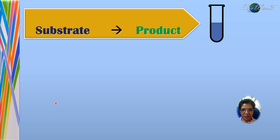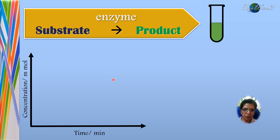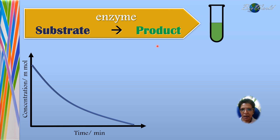In an enzymatic reaction, we have a substrate that will be converted by the enzyme into a product. To monitor the reaction, we can either measure the decrease in substrate or monitor the increase in product. Based on that data, we can plot a graph where the y-axis is concentration against the x-axis, which is time. If we monitor the decrease in substrate, we get a downward curve; if we monitor the increase in product, we get an upward curve.